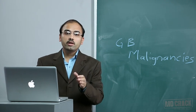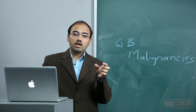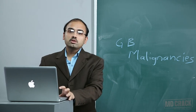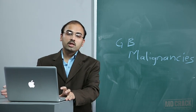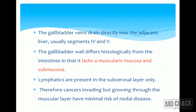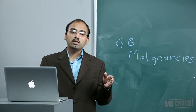Because the submucosa is absent in the gallbladder, the lymphatics — which in the small intestine are located in the submucosa — are instead present in the subserosal layer in the gallbladder. Therefore, lymphatic spread does not occur unless tumor cells reach the subserosal lymphatic plexuses. Spread to lymph nodes only occurs when the tumor crosses the muscularis propria into the subserosal layer.